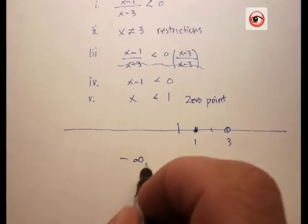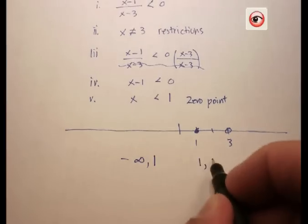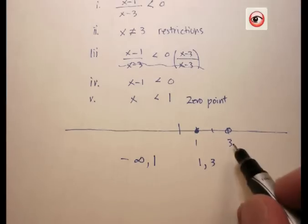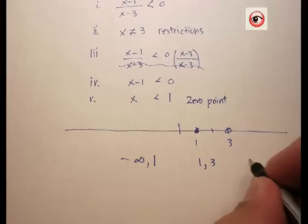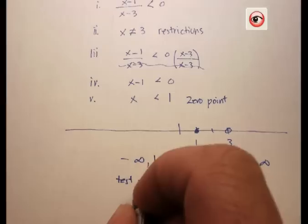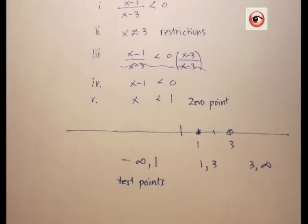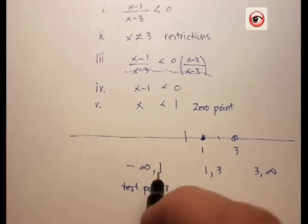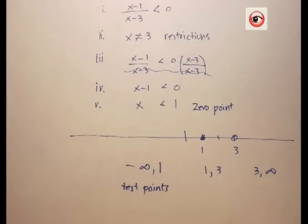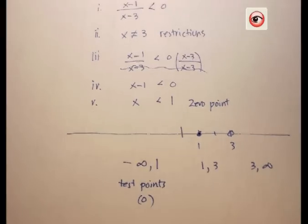What I have now is my x-axis divided into three regions. I have everything from negative infinity all the way up to one, everything between one and three, and everything from three all the way up to positive infinity. I'm going to test points in each of these regions in my original problem and see if those actually make my statement true. What number is from one and all the way down to negative infinity? I'm going to choose test point zero because zero is somewhere in that interval.